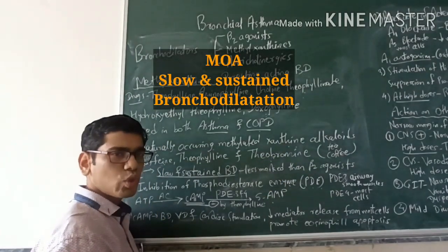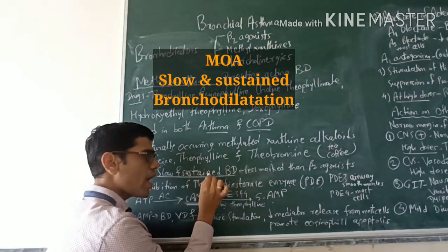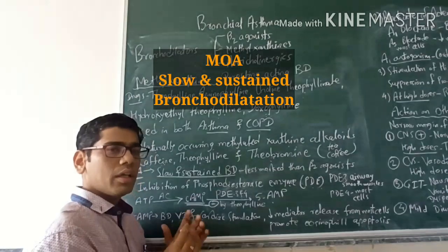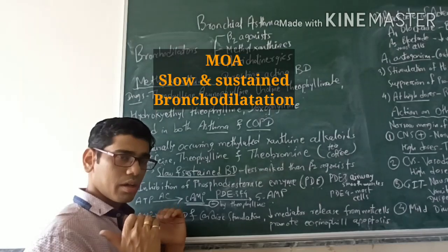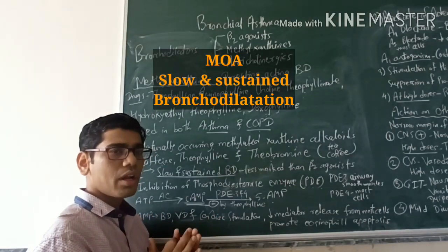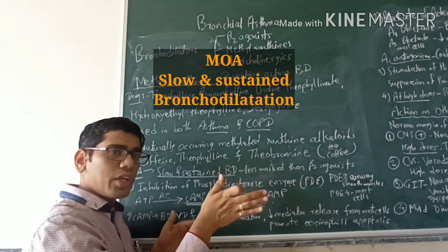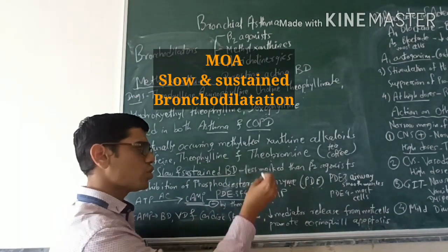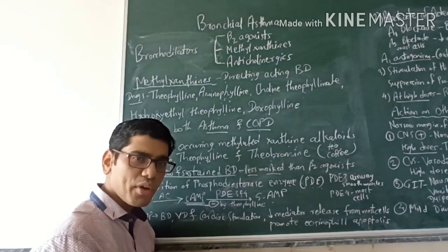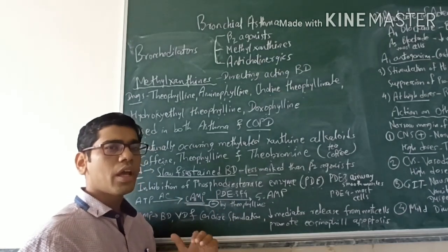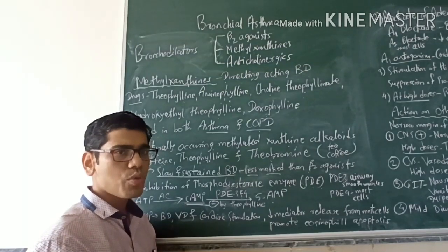The mechanism of action of theophylline: it produces bronchodilation, but it is a slow and sustained bronchodilation. Remember, beta-2 agonists produce faster or rapid bronchodilator action with a short duration of action, but theophyllines produce slow and sustained bronchodilation. Their bronchodilation is less marked than beta-2 agonists like salbutamol. That is why theophyllines are not useful in acute attack of asthma but can be preferred in moderate to severe chronic asthma.